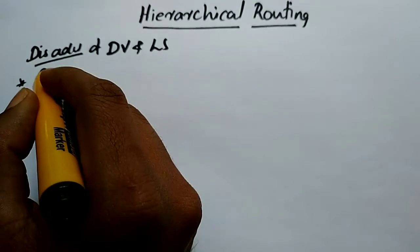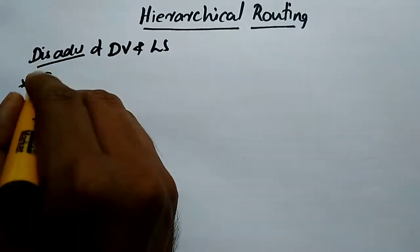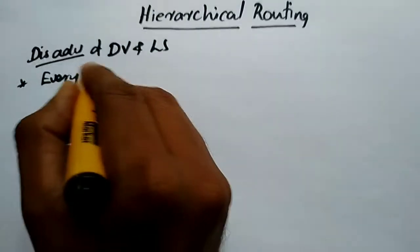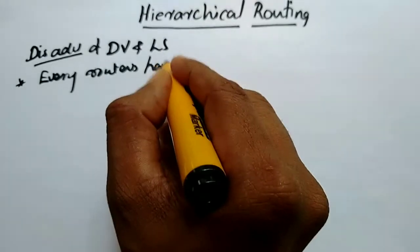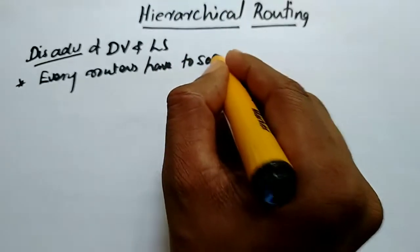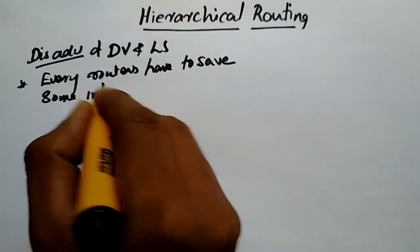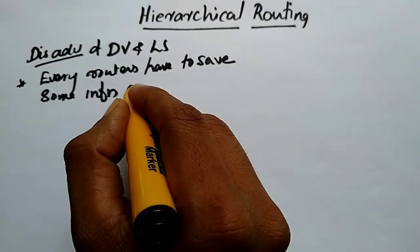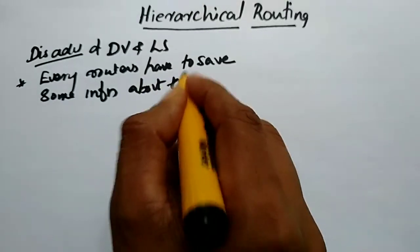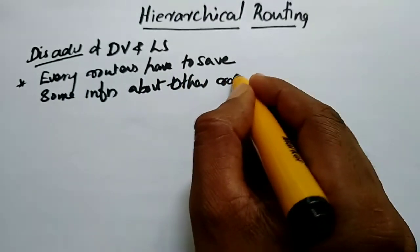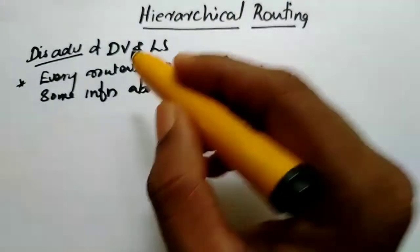Every router has to save some information about other routers. If we are going to study distance vector routing, we are going to study some information that each router saves about other routers.